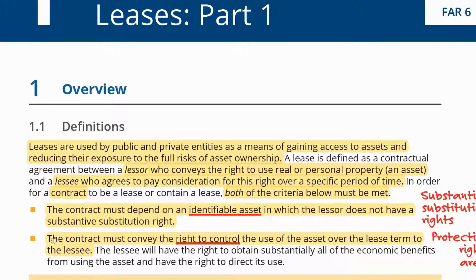Absent any of those criteria, you cannot say that the contract contains a lease. For example, what if you have an agreement to transport goods from one place to another through a ship, and the goods are going to occupy substantially most of the area of the ship? Is it a lease agreement? You're going to have to check whether there is an identifiable asset — that would be the ship — and then whether you have the right to control the use.